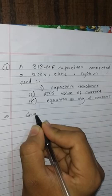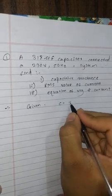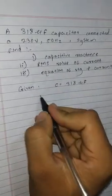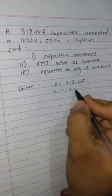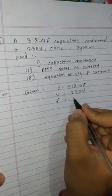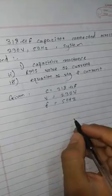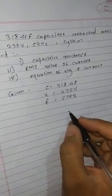First of all we write given values. Given value is C equals 318 microfarad, voltage 230V, and supply frequency 50Hz. We have to find these values.